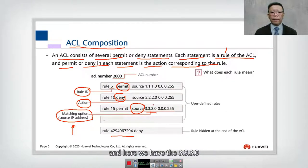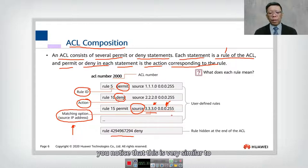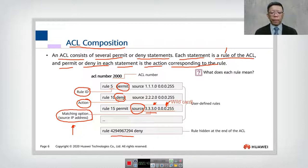And here, we have the 3.3.3.0, and we also have 0.0.0.255. You'll notice that this is very similar to what we learned on the subnet, but we don't call it a subnet. We call this as a wild card. Now you also can see that the rules from 5 to all the way to 4.2 billion,